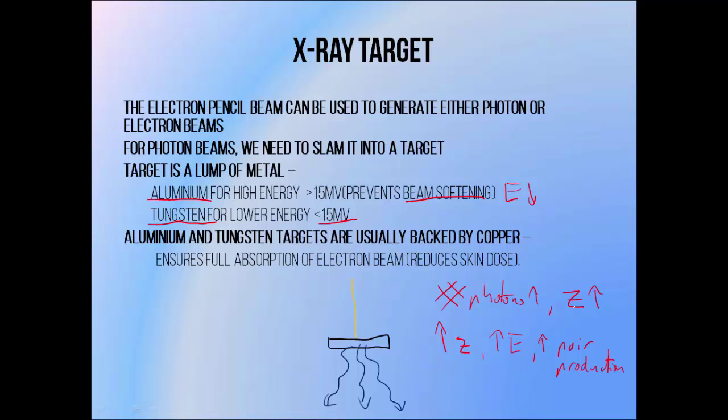So in a dual photon energy machine, as most linear accelerators are, each photon beam energy will have a separate target. Targets also tend to have a copper backing, which ensures that all of the incident electron pencil beam is absorbed. This is important because it is pointed directly at the patient, and any electrons making it through the target are going to result in unnecessary dose to the patient's skin. When using linac photon beams the goal is generally to treat deep structures, so skin dose is undesirable.